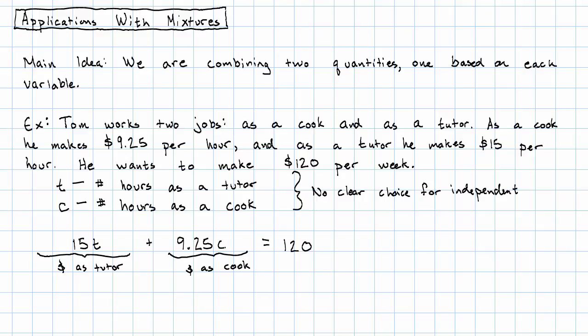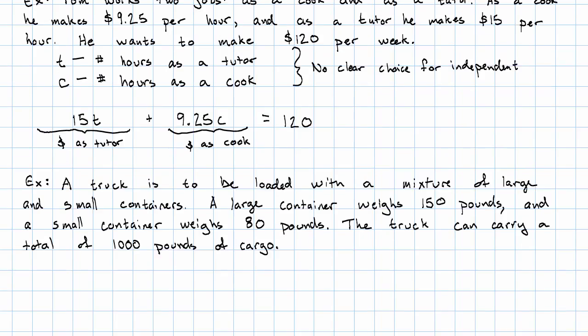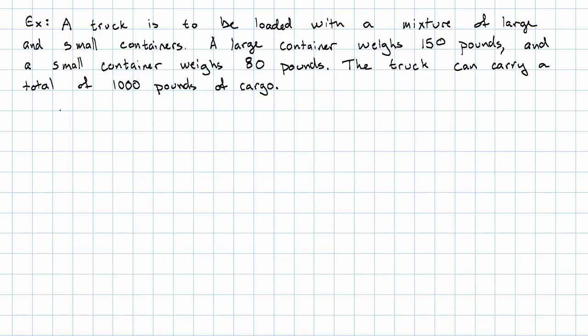Let's see another example. Suppose a truck is being loaded with a mixture of large and small containers. A large container weighs 150 pounds, and a small container weighs 80 pounds. The truck can carry a total of 1,000 pounds of cargo. Our variables are L, the number of large containers, and S, the number of small containers.